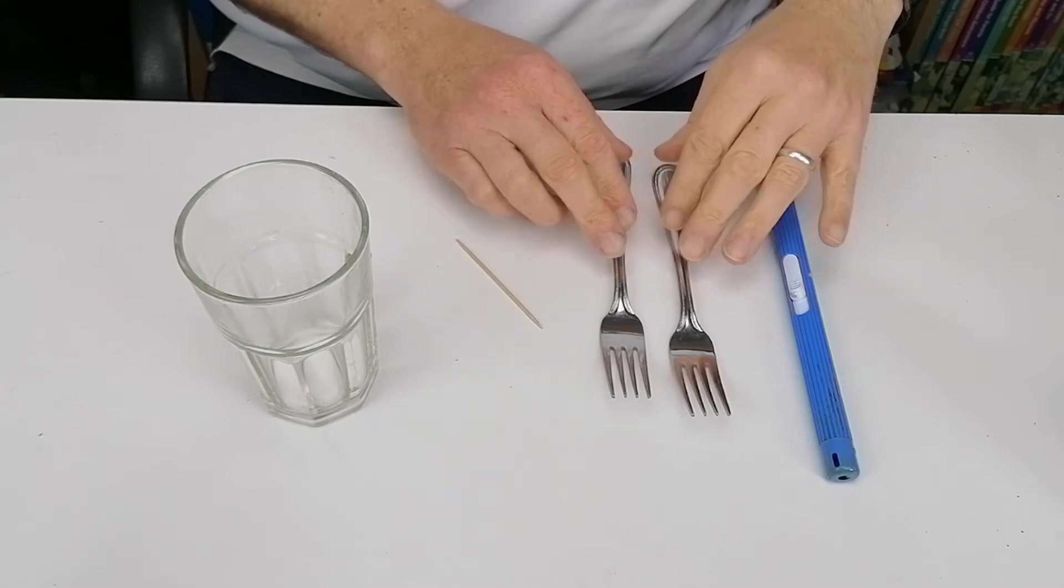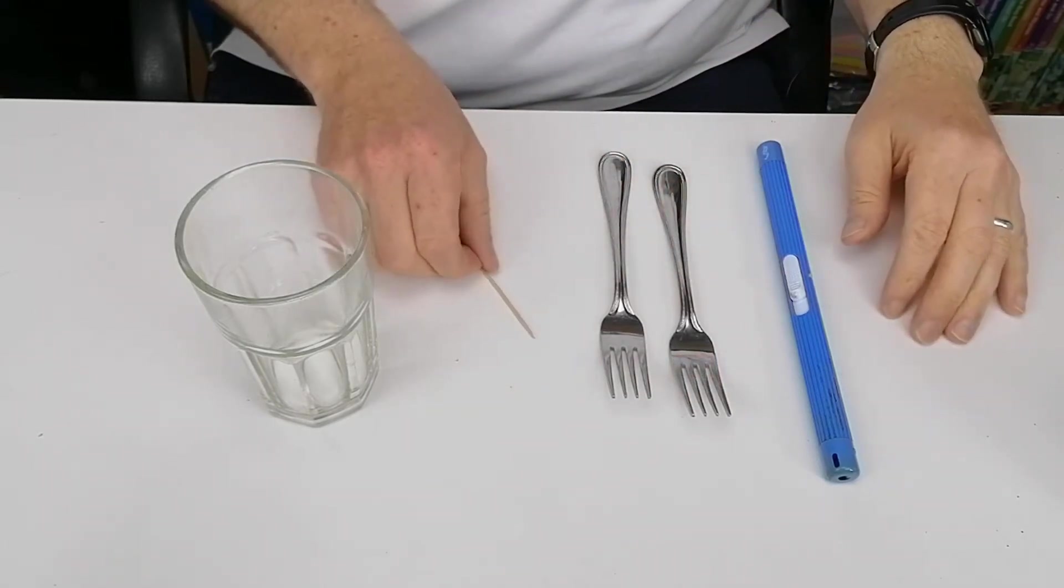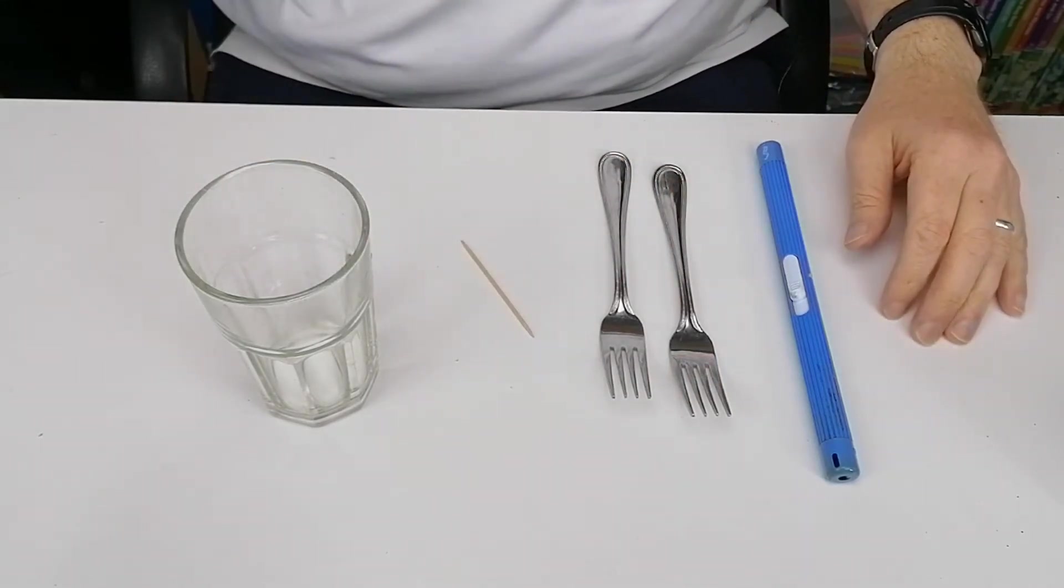What we're going to try and do here is we're going to try and get two forks and a toothpick to balance on the edge of a glass.